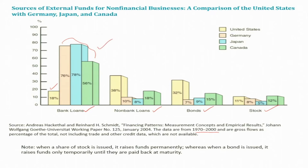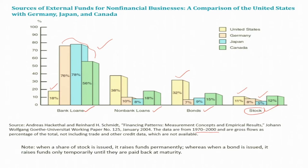Let us make some more observations. Stocks actually have a very small share — for the US, stocks account for only 11% of external funds, and for Japan only 5%. Even bonds occupy 32% for the US, but shares occupy only 11%. So the common belief that stocks are the major source of external funds for firms is not true — firms actually rely on bonds, bank loans, and non-bank loans.